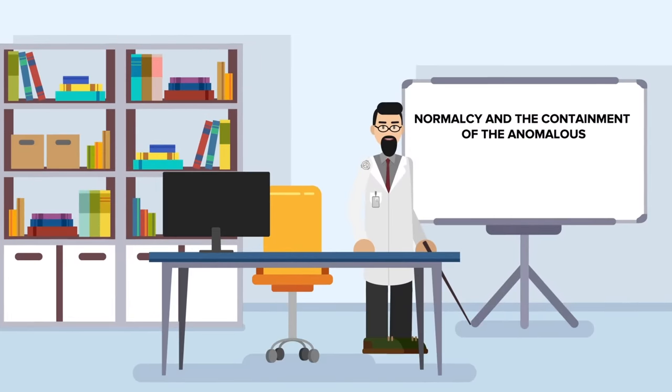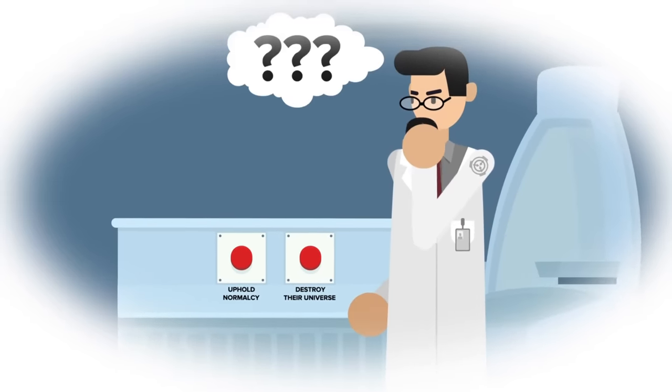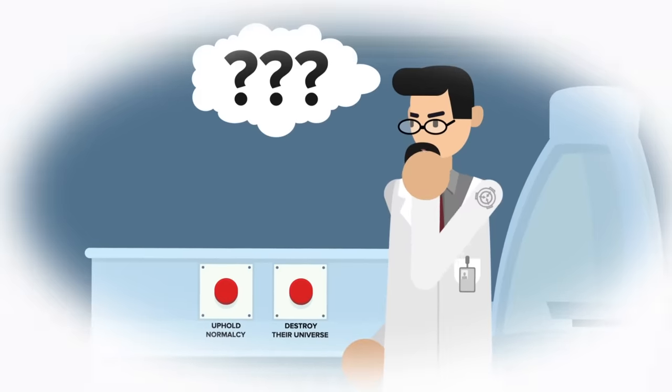In any case, we know the SCP Foundation is dedicated to normalcy and the containment of the anomalous. But what happens when the SCP Foundation is faced with a dire decision? Uphold normalcy, or destroy their universe?